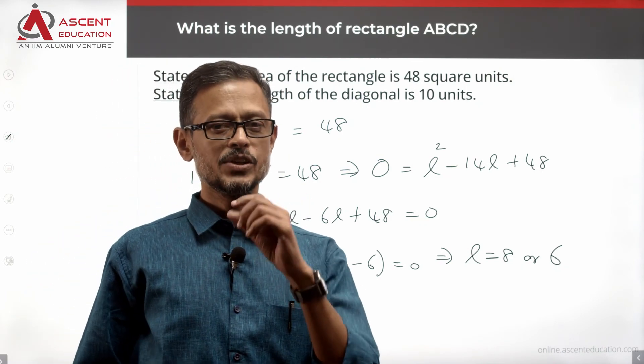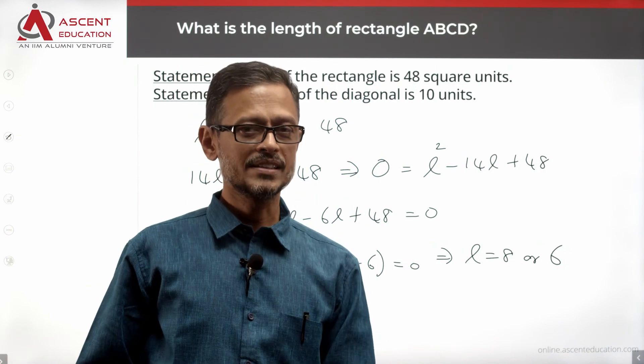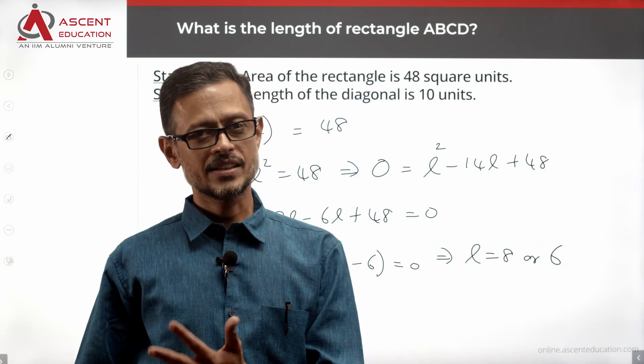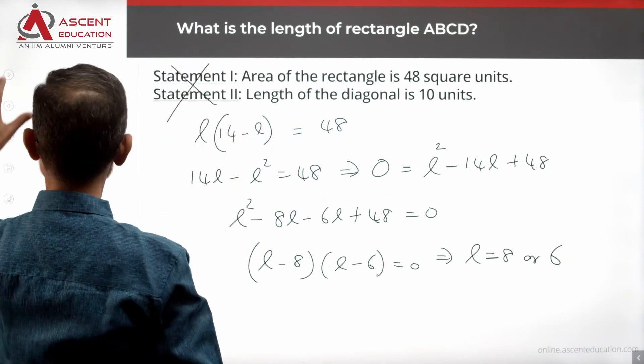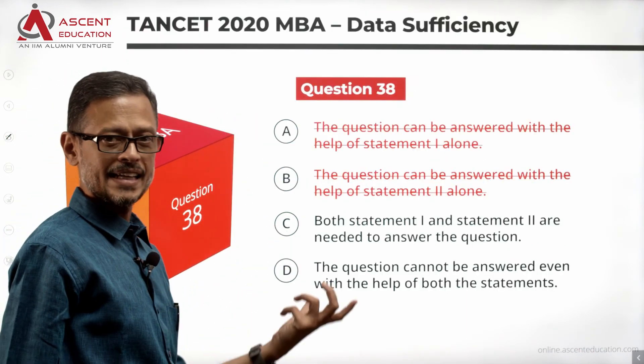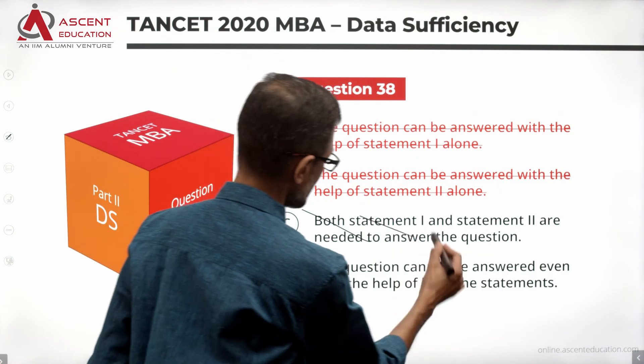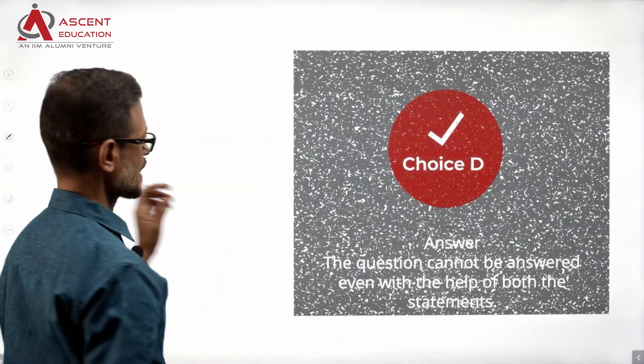Do we get a unique value for the length? No. We are getting two values for length. Length could be 8 or length could be 6. Which means despite combining the two statements, we don't have a unique value for the length. So statements together are not sufficient. Eliminate answer option C. Choice D is the correct answer to this question.